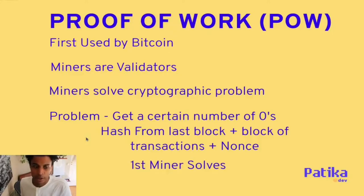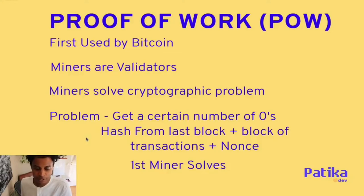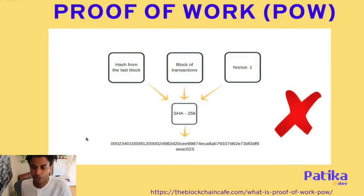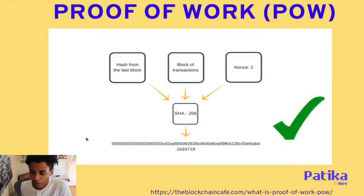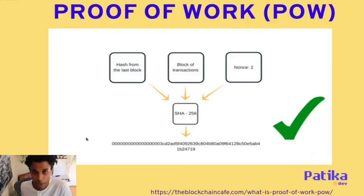Whoever first solves that problem by altering the nonce value gets rewarded — those are the miner rewards for validating the transactions. For example, with SHA256, a nonce of one might produce only three leading zeros, which is incorrect. But changing the nonce to two might produce multiple zeros, making it a valid block — that's the proof of work. The disadvantage is that more compute power means faster solving, creating disparity and high energy consumption, which is why a new mechanism was needed.